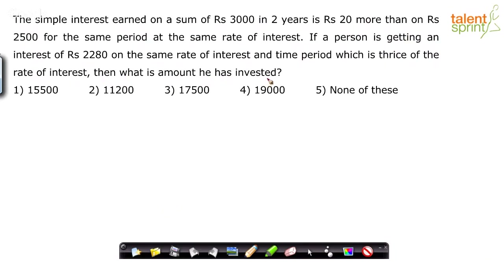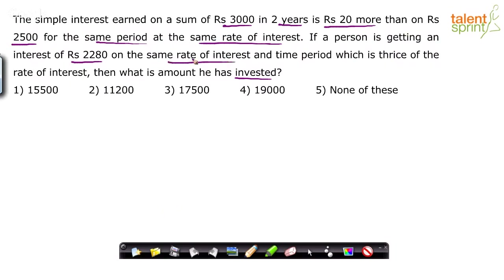So basically, the simple interest on rupees 3000 for two years is 20 more than the simple interest on rupees 2500 for the same period — that is, same two years — and at the same rate of interest. We have to find out what amount was invested if this person gets rupees 2280 as interest on the same rate of interest and a time period which is thrice of the rate of interest.